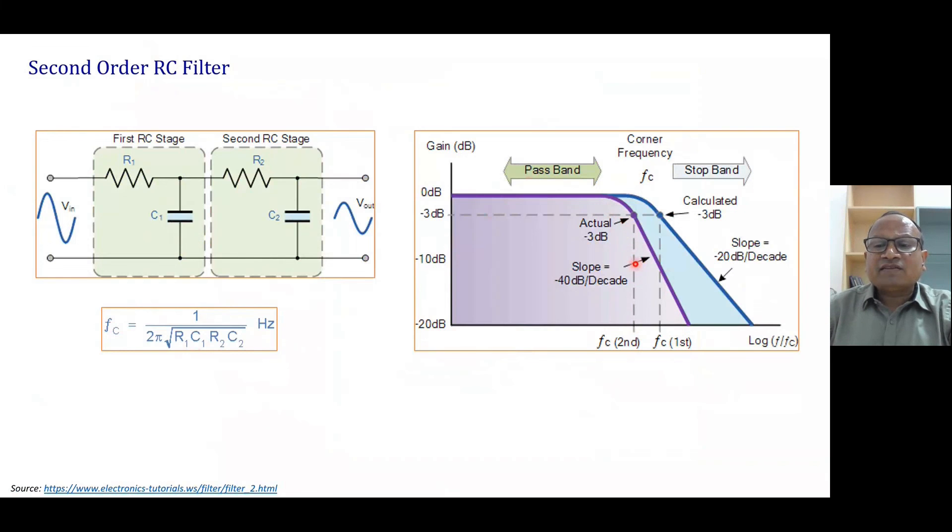When we find the second order, it means when we are increasing the order of the filter, the cutoff frequency is coming this side. So you are going towards more ideal response. When you do third order, it will even go this side. And here exactly is the ideal filter. So when we increase the order of the filter, we are reaching towards the ideal response or the response of ideal filter.